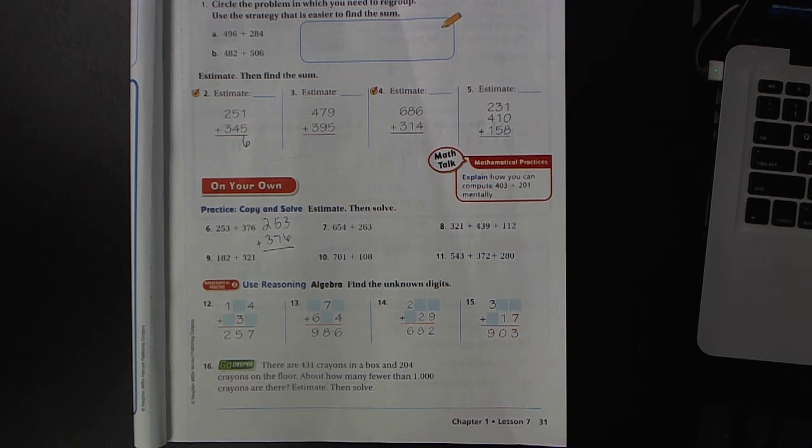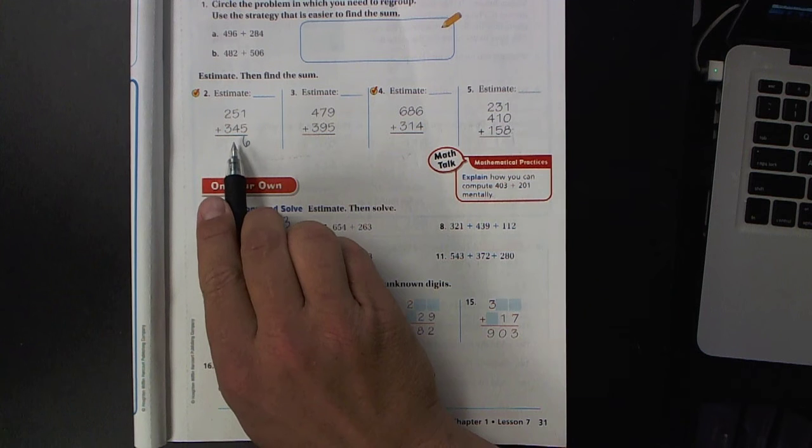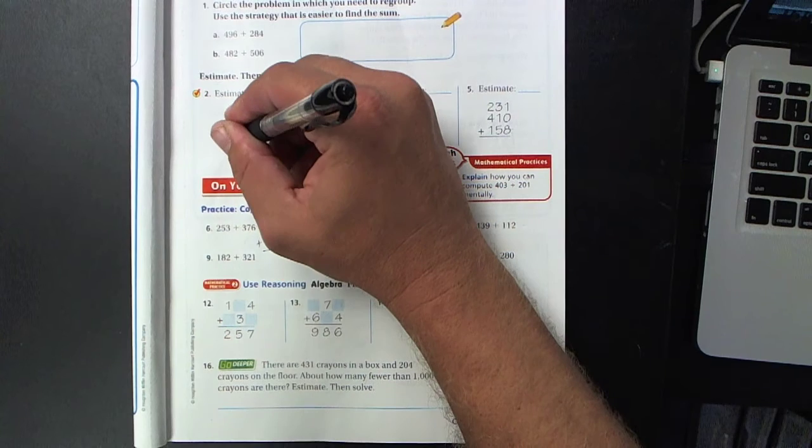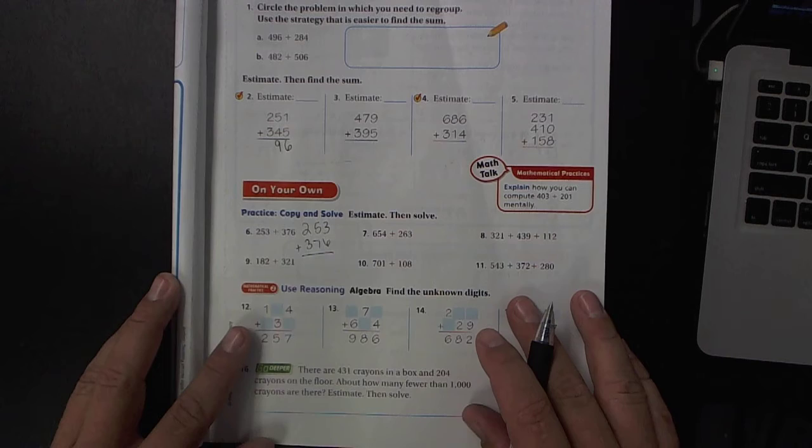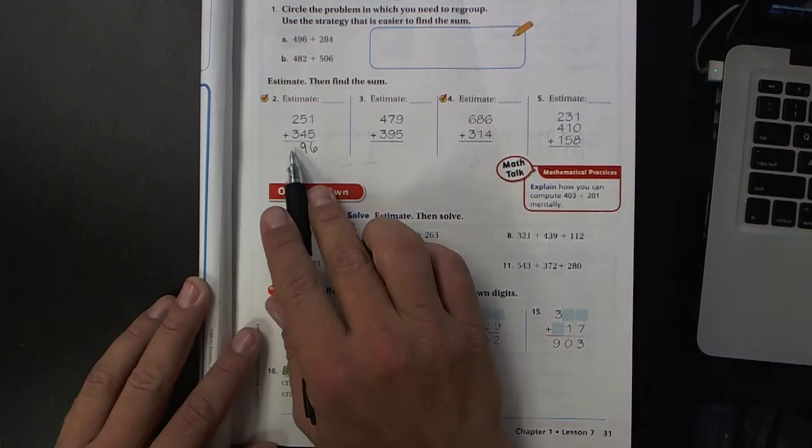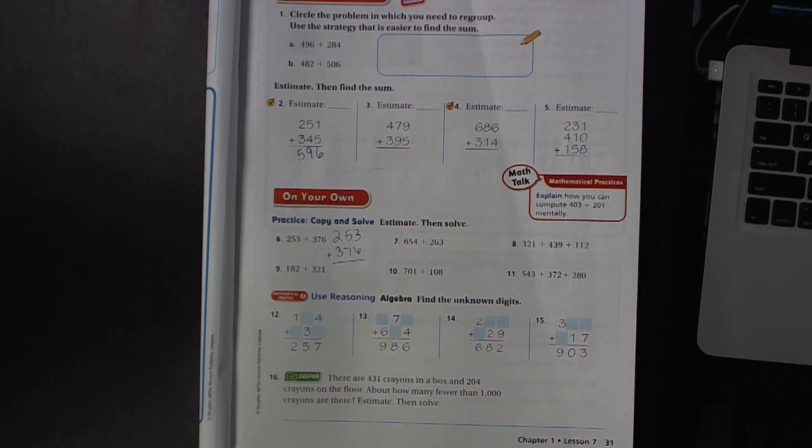Then you look over to the next place value, which is the tens place. 5 plus 4 is 9, and 2 plus 3 in the hundreds place is 5. Okay, so that's pretty straightforward. We did not have to do any carrying there.